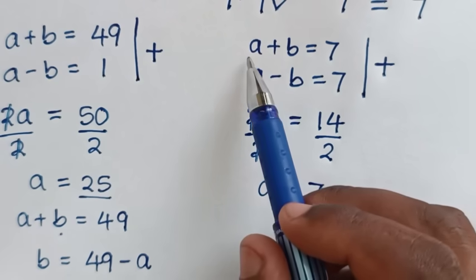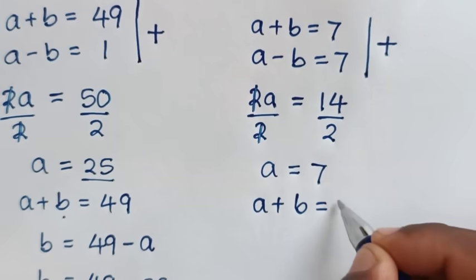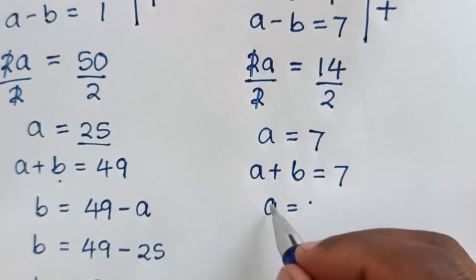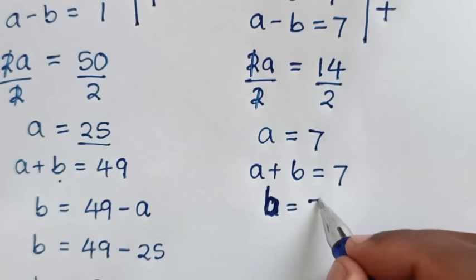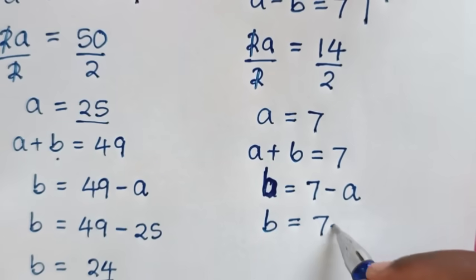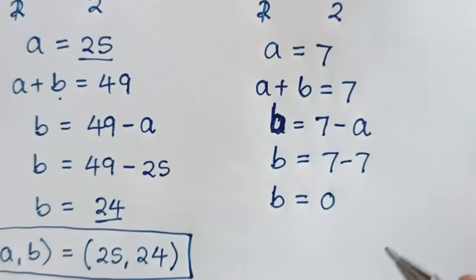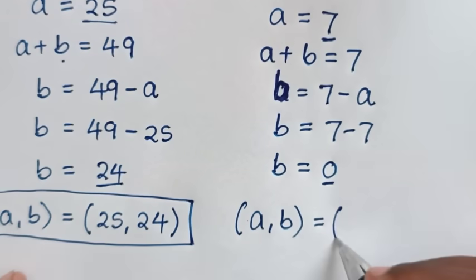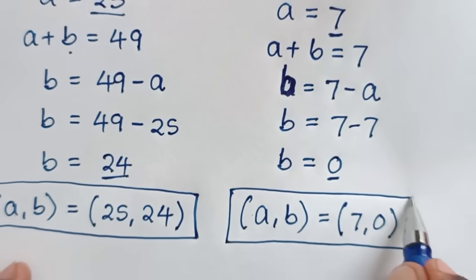Then we divide both sides by 2, so a is equal to 14 divided by 2, which is 7. To find the value of b from the first equation in the second solution, a plus b equals 7. Taking a to the other side, b equals 7 minus a, which is 7 minus 7, so b equals 0. Therefore a comma b equals 7 comma 0.